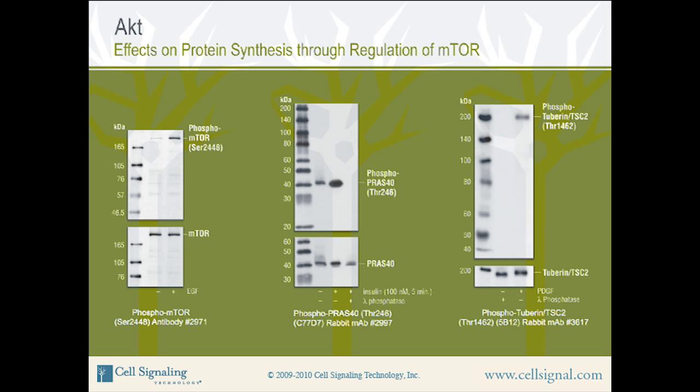Shown here are three western blots depicting AKT as a regulator of mTOR. The western blot on the left features extracts from serum-starved 293 cells, untreated or EGF-treated, using phospho-mTOR serine-2448 antibody, product number 2971. EGF treatment results in increased phosphorylation of mTOR at serine-2448. Note levels of total mTOR using mTOR antibody, product number 2972, remain unchanged. EGF signals through the EGF receptor to activate AKT.